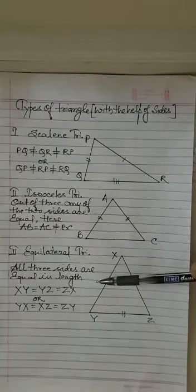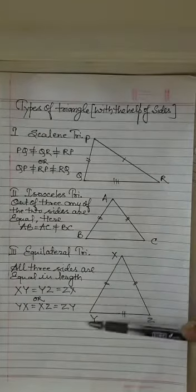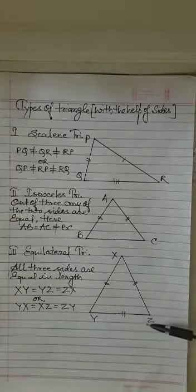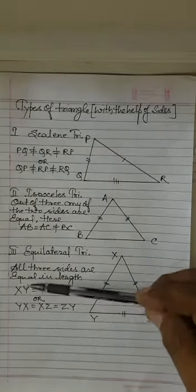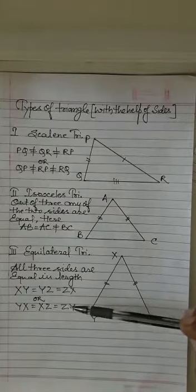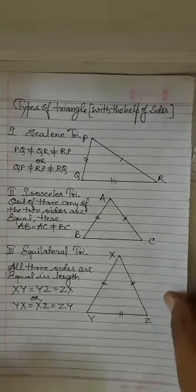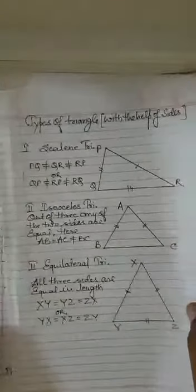Third is equilateral triangle. All three sides are of equal length. Here XY is equal to XZ is equal to YZ. So I wrote XY is equal to YZ is equal to ZX or I can write XY, XZ and ZY. So this is a different type of the triangles with the help of the sides.